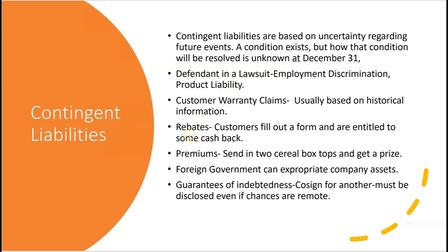Contingent liabilities can also come from a rebate, where customers fill out a form and send it in to get cash back. Not everybody fills out that form, so management estimates what percentage of customers will claim their rebate. Other contingent liabilities come from premiums — for example, send in two cereal box tops and get a prize. Management estimates that contingent liability based on historical information. There are also contingencies regarding foreign governments who can expropriate company assets.